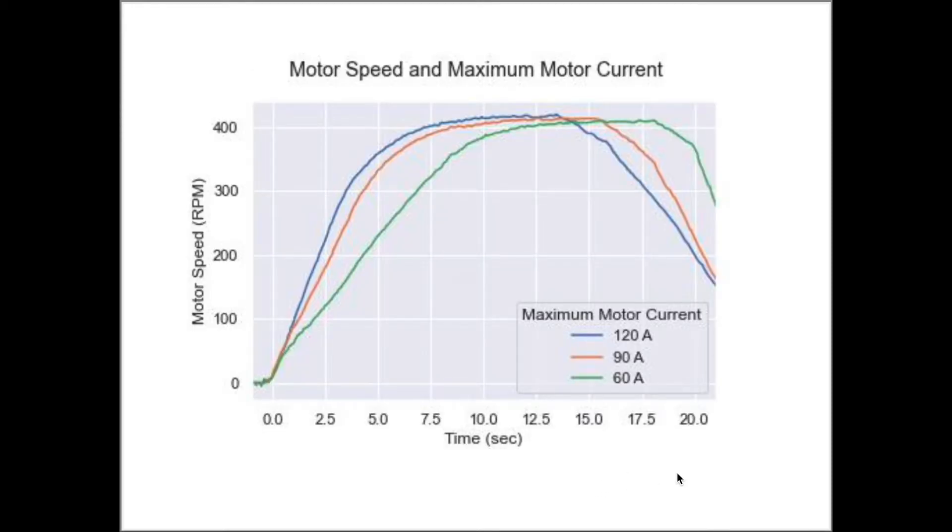From this RPM time series graph, we can see that the motor hits a given speed, say 200 RPM, more quickly for higher motor current limits.